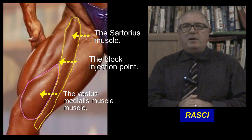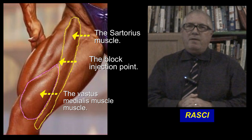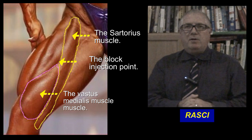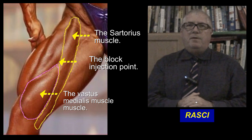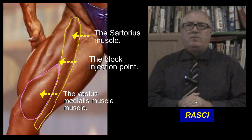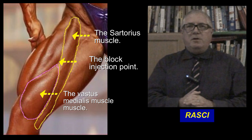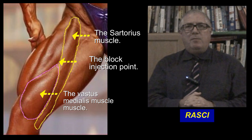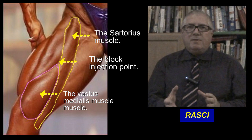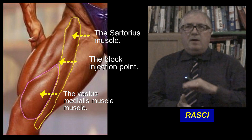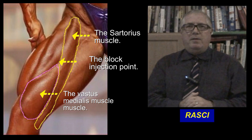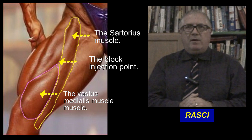The adductor canal block is thus used either as a block of the saphenous nerve for lower leg surgery, or in combination with a periarticular infiltration of the knee joint. The advantage of the block is there are two anatomical visual guides to finding the saphenous nerve: namely the overlying sartorius muscle and the femoral artery.